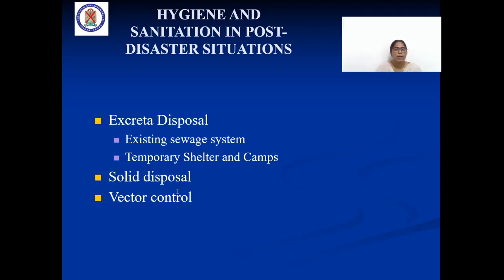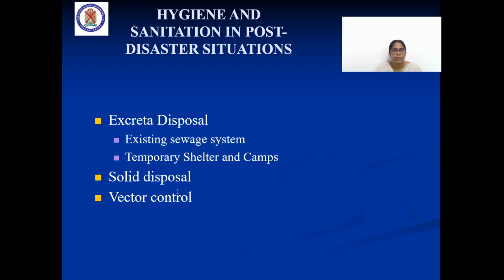Vector control is critical because post-disaster situations are most favorable for rapid increases in the population of insects and rodents, which can create health risks and destroy large quantities of already scarce food items. The vector problem generally develops in densely crowded conditions where sanitation is inadequate. Flies, lice, mites, mosquitoes, and bed bugs are disease vectors that develop in uncontrolled environments. Vector control must follow a definite plan and program, with special teams organized to control various types of vectors.